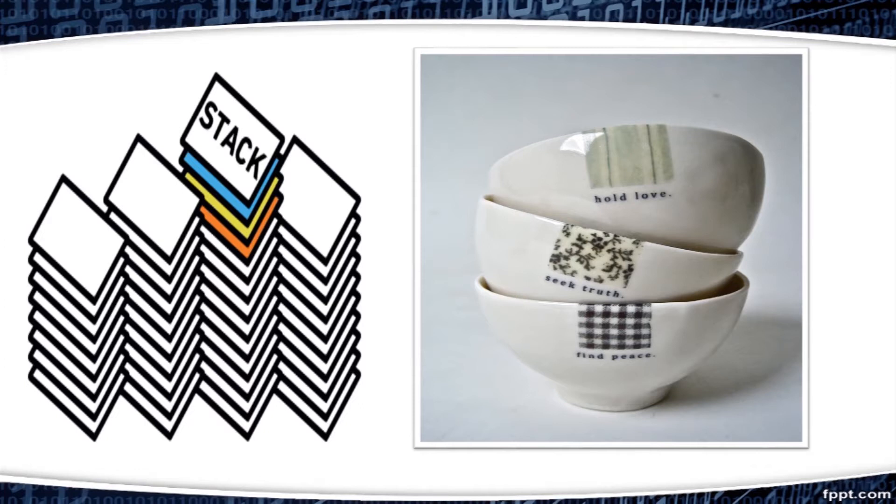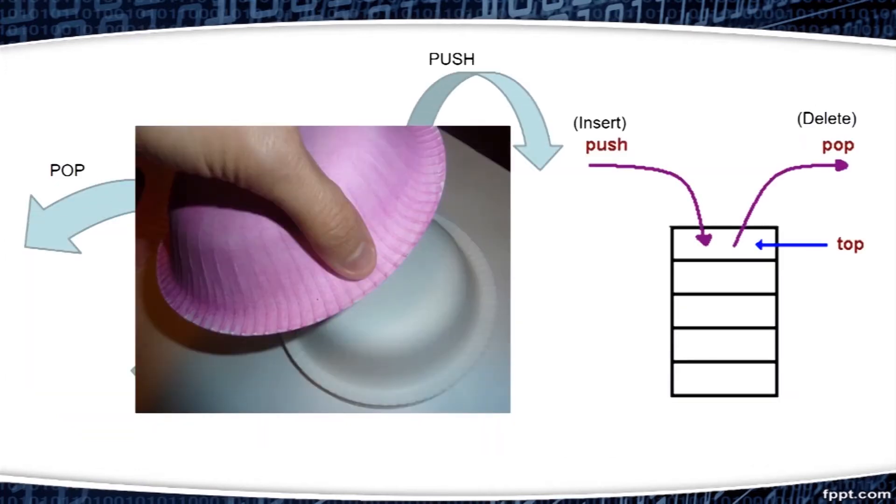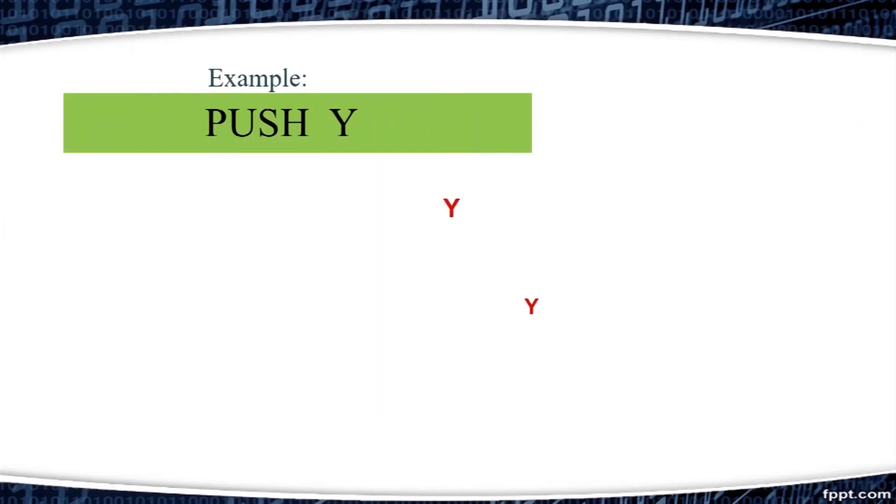Like a stack of bowls. Here, we pick that bowl first which we kept at the last. Process of inserting data in stack is called push. Put a bowl on stack. And process of deleting data from stack is called pop. Remove bowl from stack. So, generally stack instructions are push and pop. Example, push Y. This instruction pushes the word Y to the top of the stack. Updating of the stack pointer is automatically done.